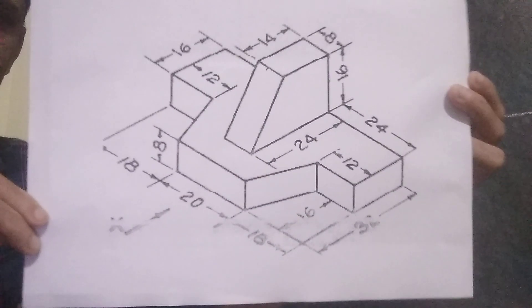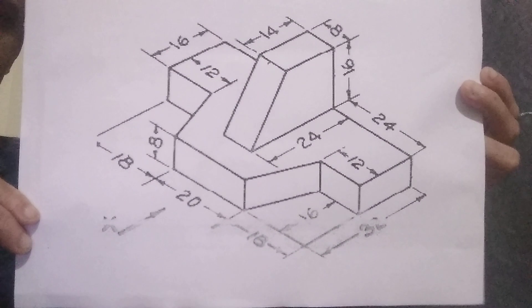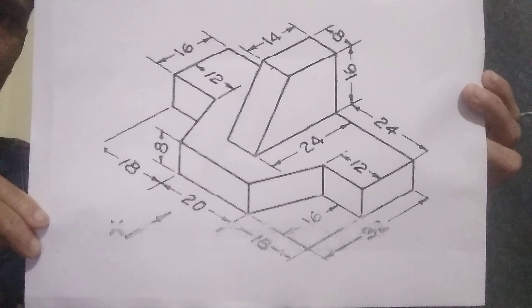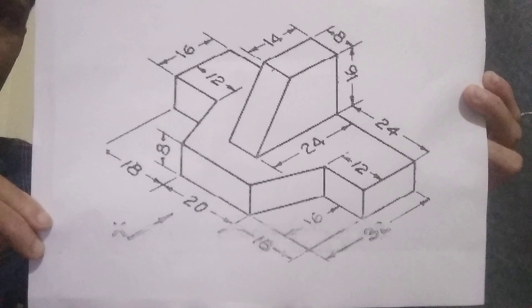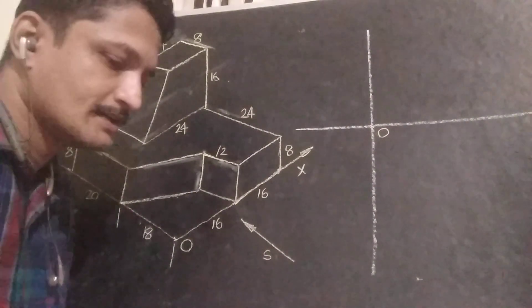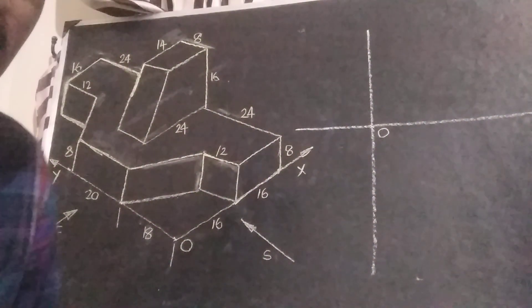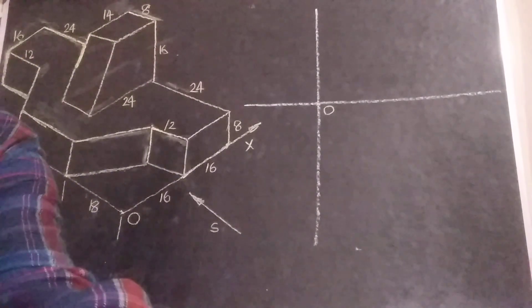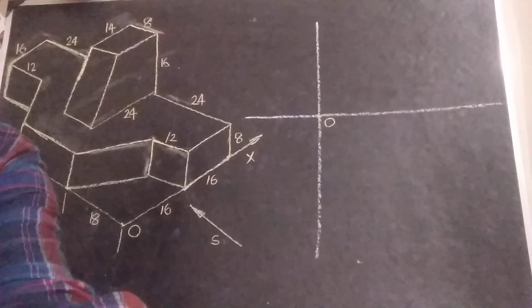This is the isometric figure. First we can draw the front view of the object.